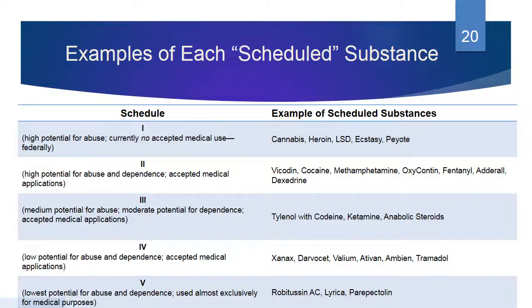Schedule 4: low potential for abuse and dependence, accepted medical applications — Xanax, Darvocet, Valium, Ativan, Ambien, and Tramadol. Basically all of your benzodiazepines. Schedule 5: lowest potential for abuse and dependence, used almost exclusively for medical purposes — Robitussin cough syrup, Lyrica, and Parapectolin. Keep in mind that Xanax taken in combination with OxyContin causes people to die. We're not even looking at combinations. We're just looking at the absurdity.